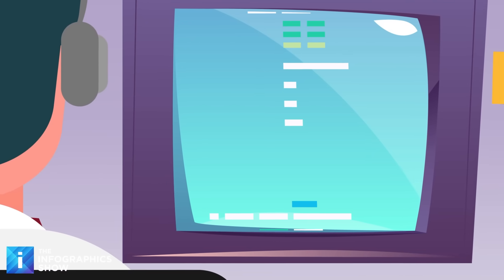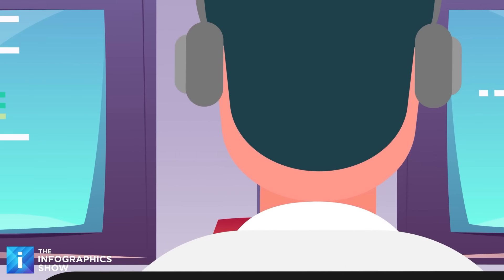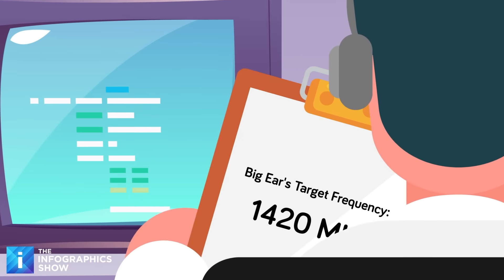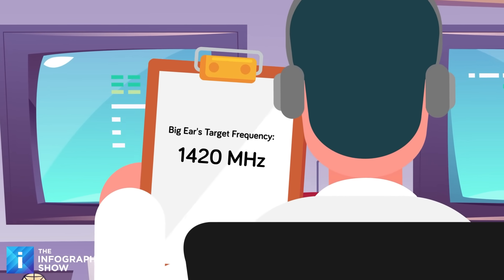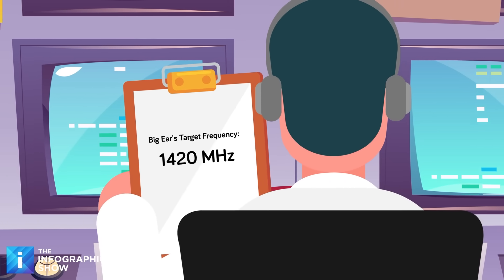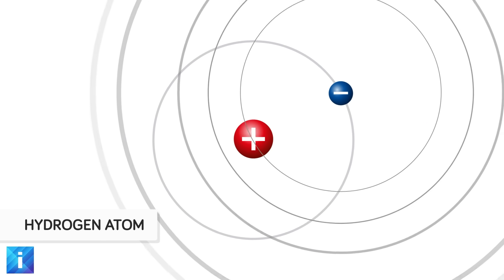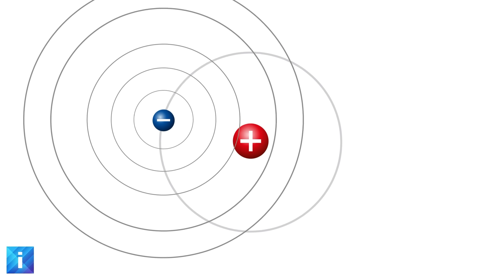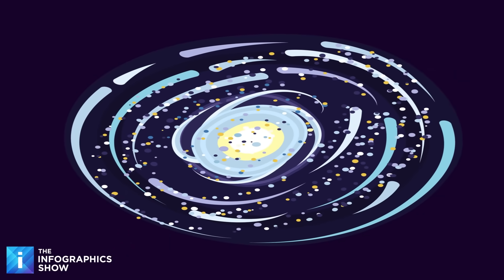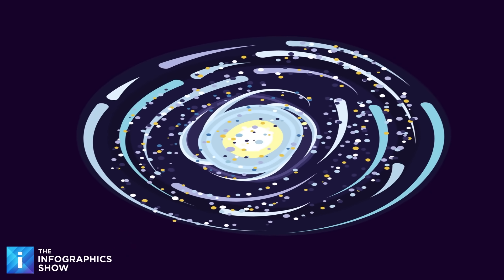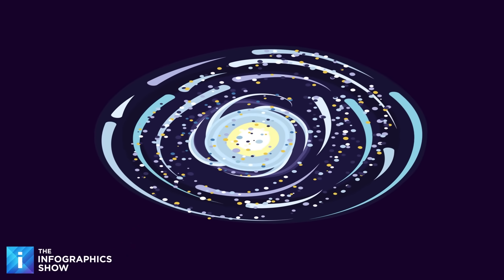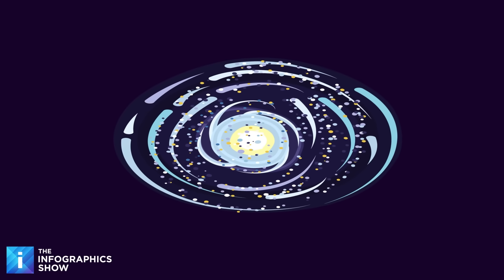The Big Ear team wasn't just listening randomly, they had a target frequency that made perfect sense from a cosmic perspective - 1420 megahertz, better known as the hydrogen line. This is the frequency at which hydrogen atoms naturally emit radio waves when their electrons flip from one energy state to another. And since hydrogen is the most common element in the universe, essentially the building block of everything, this frequency is like the universe's baseline hum.